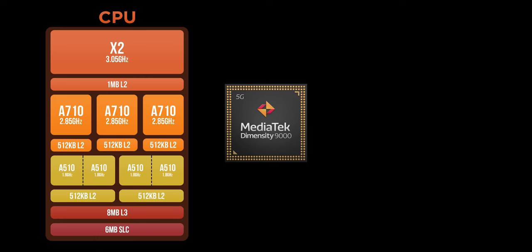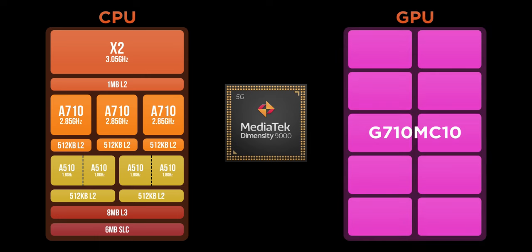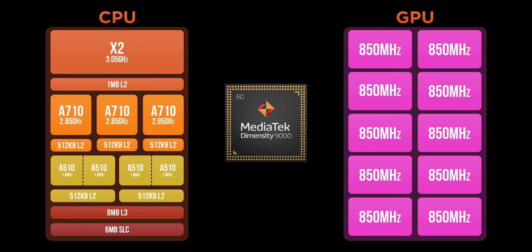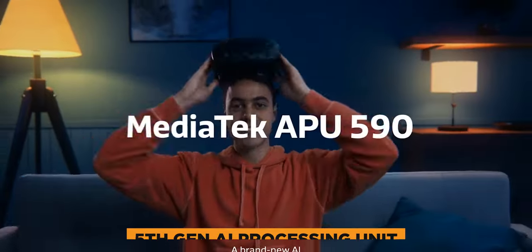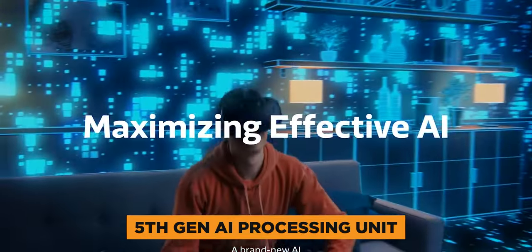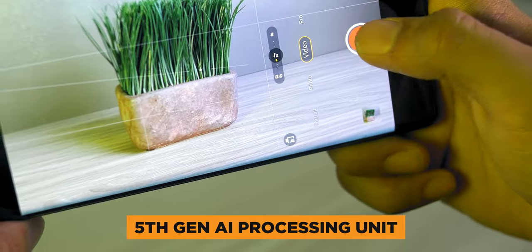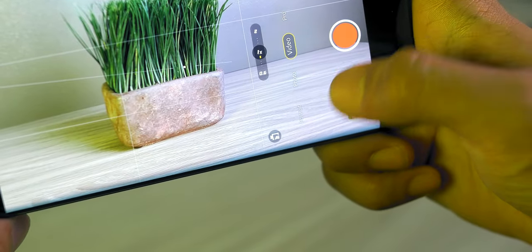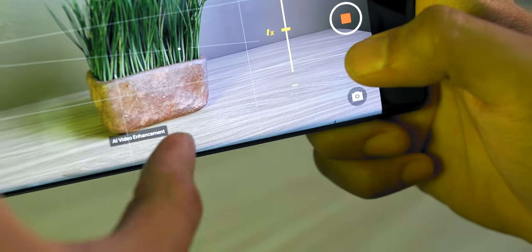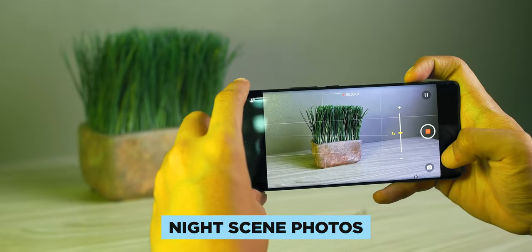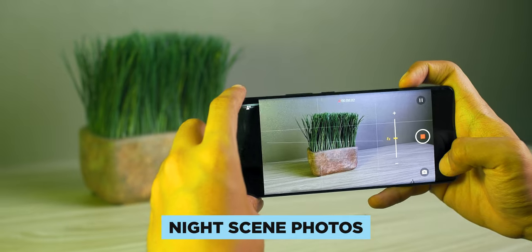In terms of GPU, MediaTek paired it with their newest Mali G710, specifically a G710MC10. It's a 10-core GPU clocked at 850MHz. Other features of the MediaTek Dimensity 9000 include the fifth generation AI Processing Unit, which helps achieve maximum effective performance in the latest AI tech, especially when it works with MediaTek's camera ISP.